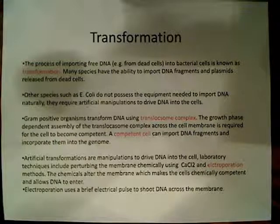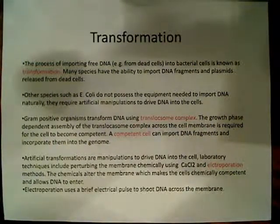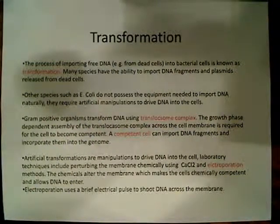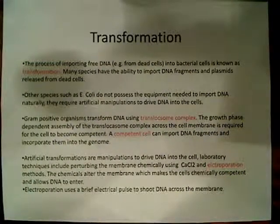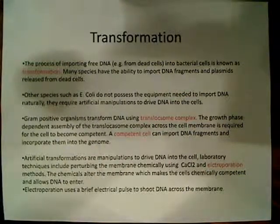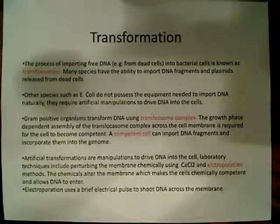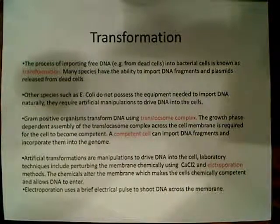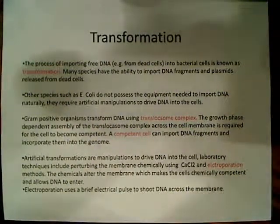Some artificial manipulations can also drive DNA into the cell in the laboratory. Techniques for perturbing the membrane chemically include calcium chloride or electroporation. Electroporation is probably the more common one — it's a brief electrical pulse that allows you to shoot the DNA across the membrane. It's very rapid and actually a nice technique. These chemicals and processes alter the membrane, which makes the cell chemically competent and allows DNA to enter.